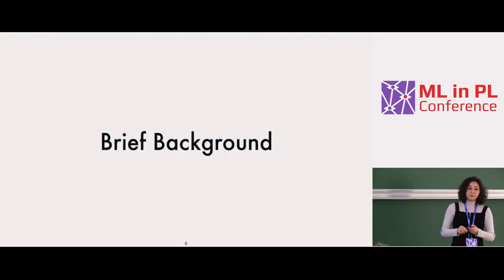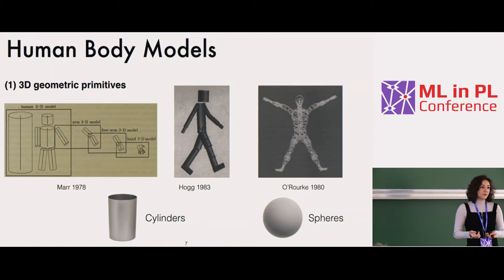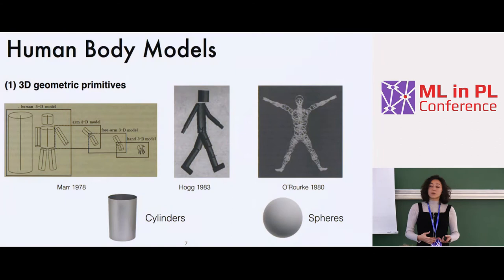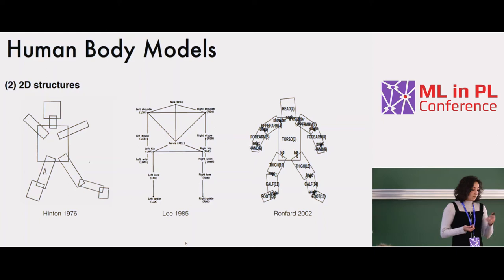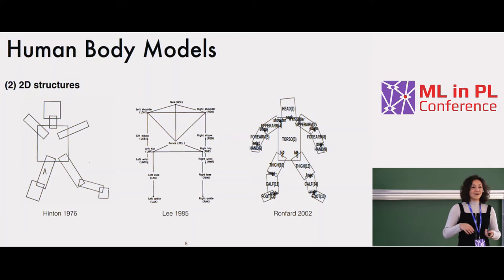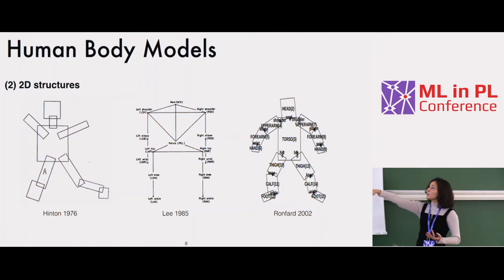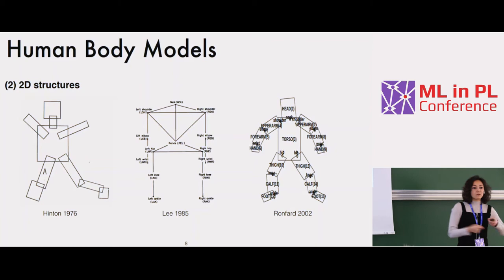A brief background: in the 1970s and 80s, the human body was already a very popular research topic. Initially it was common to represent bodies as a collection of spheres and cylinders — geometric primitives. They realized this was too difficult. This is actually Geoffrey Hinton's first paper, in the 1970s. They went back to 2D structures, using a skeleton stick-like figure with some lines or rectangles, estimating the width and aspect ratio of a rectangle — very low-dimensional and simple.